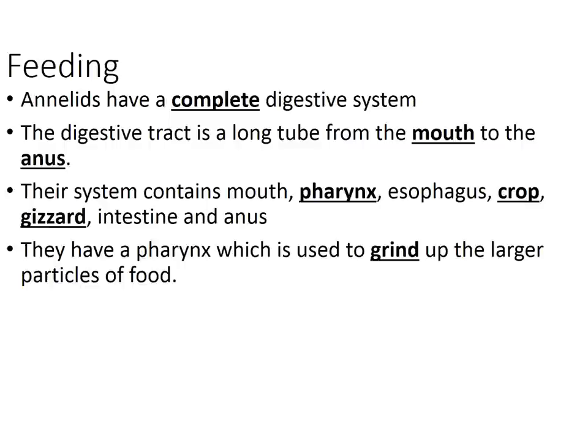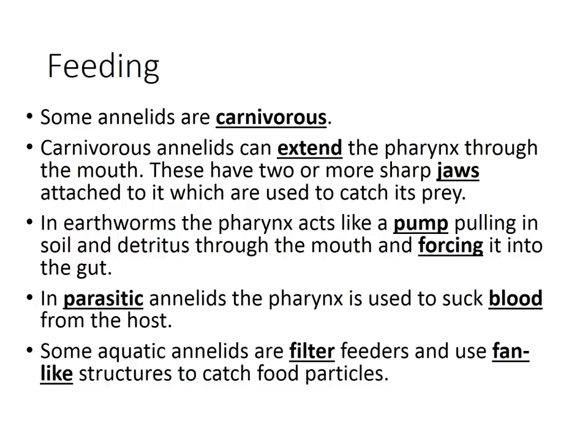For nutrition or feeding, annelids have a complete digestive system. Food goes from the mouth to the anus through the mouth, pharynx, esophagus, crop, gizzard, intestine, and anus. The pharynx helps grind up larger food particles before passing them into the crop. Some annelids are carnivorous and can extend their pharynx through their mouth, using little jaws to hold prey. In earthworms, the pharynx acts like a pump pulling in soil and detritus. In parasitic annelids like leeches, the pharynx is used to suck blood from the host. Some aquatic annelids are filter feeders with fan-like structures to catch food particles.